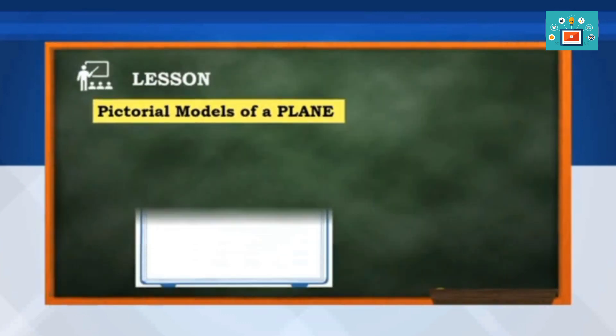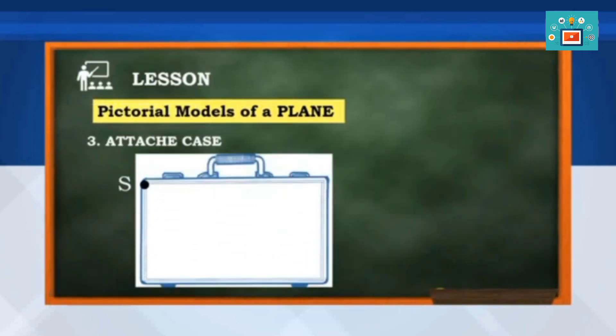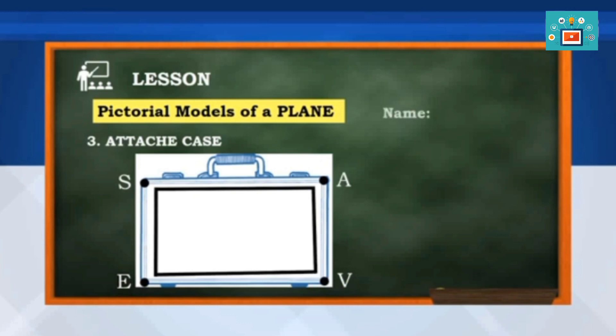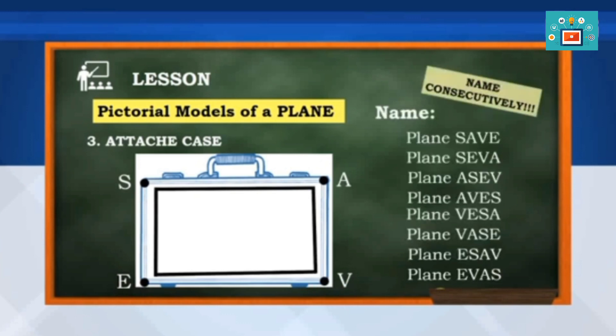Third is attach a case. Given points in every corner as S, A, B, and E, these are the possible names. Keep in mind that if you're going to name a plane using the points in every corner, you must name it consecutively.